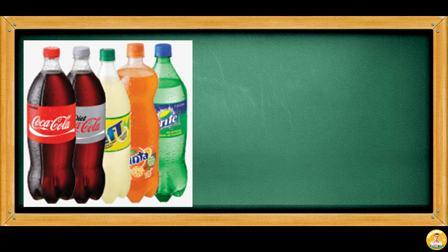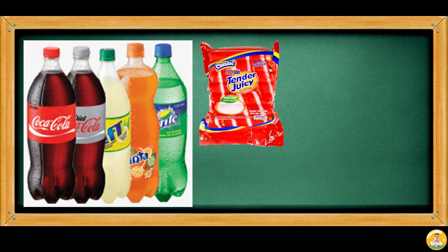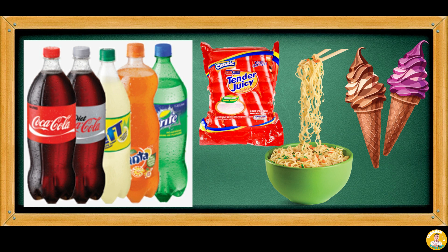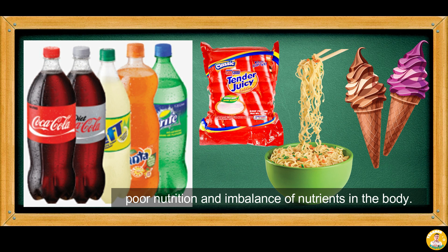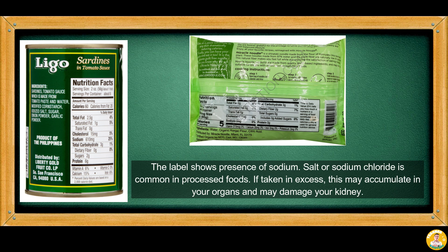Excessive intake of soft drinks, processed foods like hot dogs, and sweet and salty foods like ice creams and noodles are harmful to your health. They can cause poor nutrition and imbalance of nutrients in the body. Examine the label of sardines and noodles — the label shows presence of sodium. Salt or sodium chloride is common in processed foods. If taken in excess, this may accumulate in your organs and may damage your kidney.